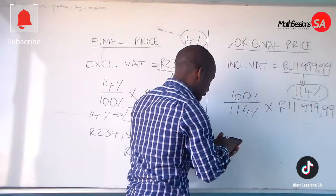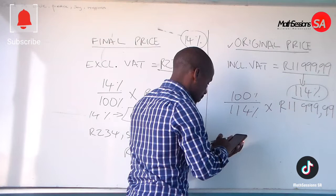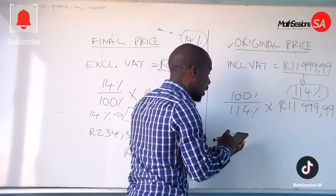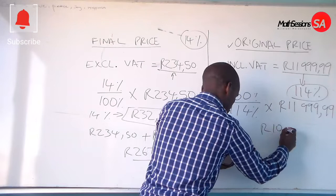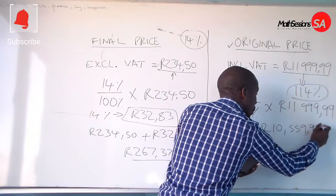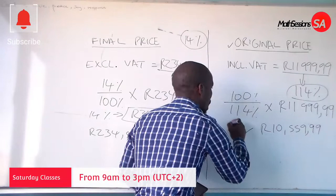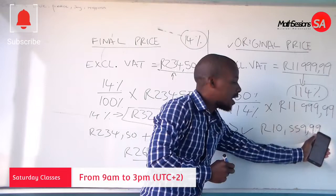Therefore, let's recalculate. We get R1052.63. So the original price, representing the 100%, is R1052.63.